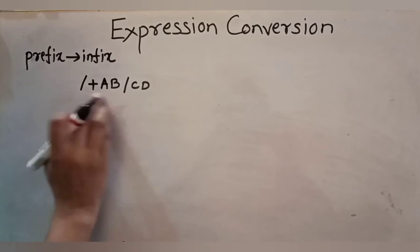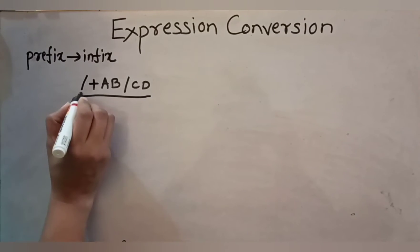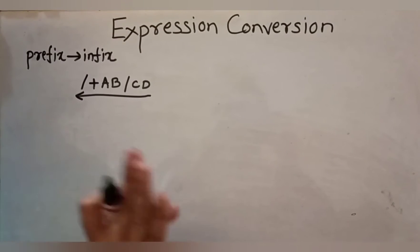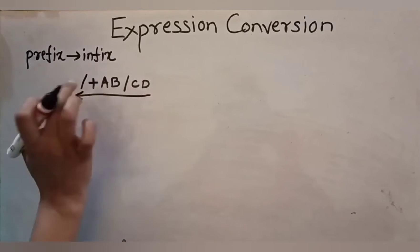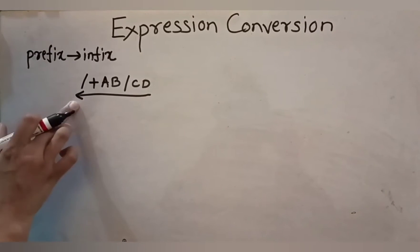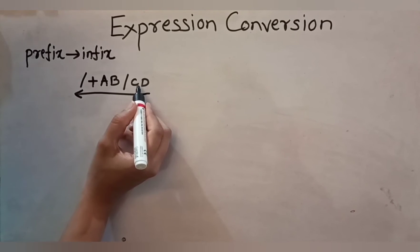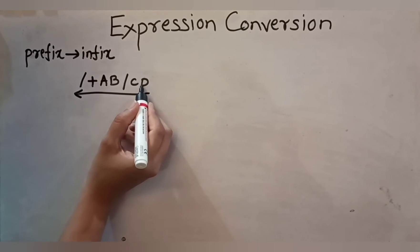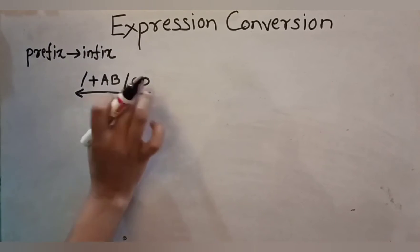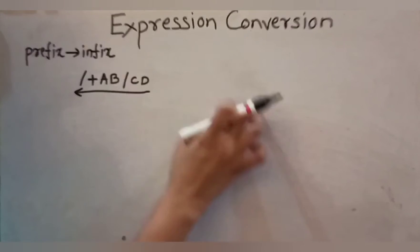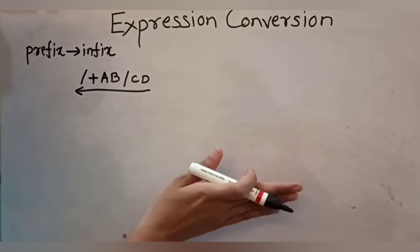Since our expression is in prefix format and we want to convert it to infix format, we have to scan the expression from right to left — in reverse order. This is the main step to always remember. We scan one character at a time and check whether it is an operand or an operator. If it is an operand, push it onto the stack. Whenever an operator comes, pop the topmost two operands, form an infix expression with that operator, and push that expression back onto the stack. The final result will be on the stack, which we delete and print to get the final infix expression.